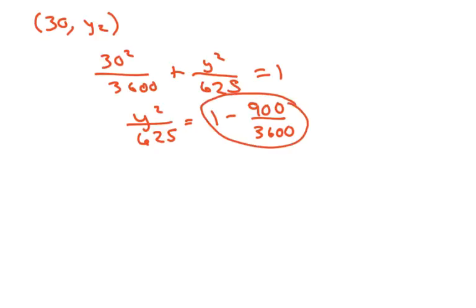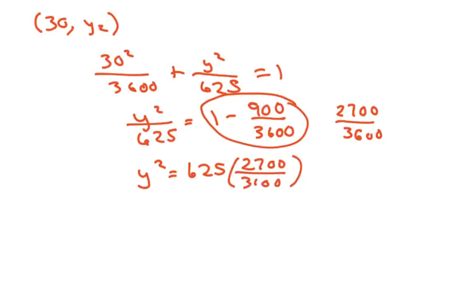This equals $\frac{2700}{3600}$, and you're going to cross multiply and then take the square root of both sides.